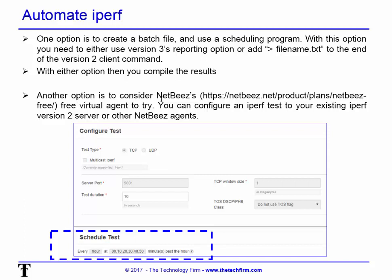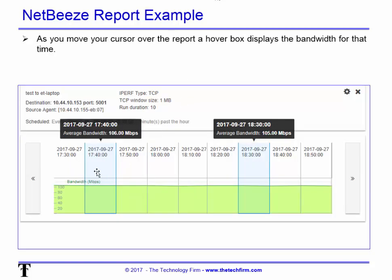Another option is to use the NetBees free virtual agent. It's free, and you can configure an iPerf test using your existing version 2 server — version 3 is not supported yet — or any other NetBees agents you might have. You can schedule tests, for example every hour at 0, 10, 20, 30, 40, and 50 minutes after the hour. The report displays results over time; hover over any point and a tooltip shows the speed for that time frame. The goal is to see how consistent performance is over time. If it's not consistent, you may have high latency, packet loss, or an inconsistent network topology like Wi-Fi. Hope that helps — have a good day!